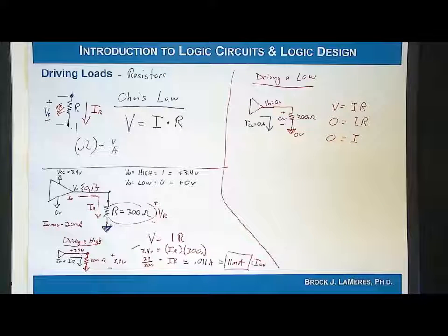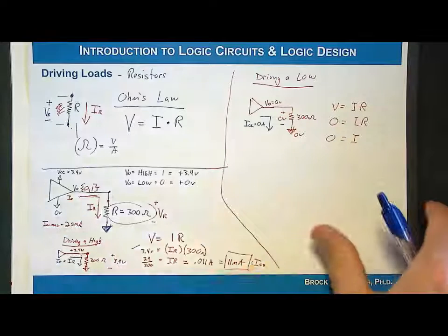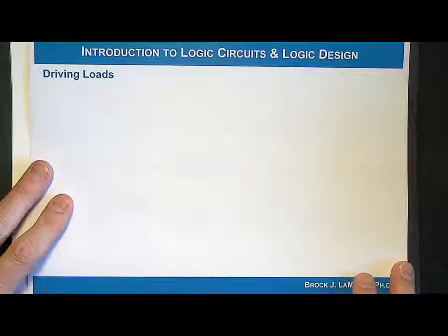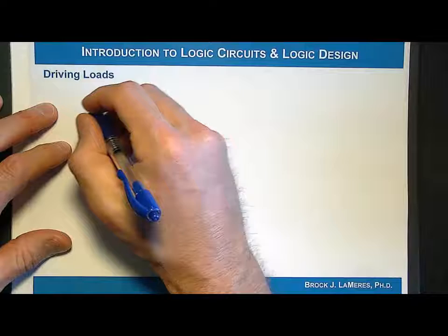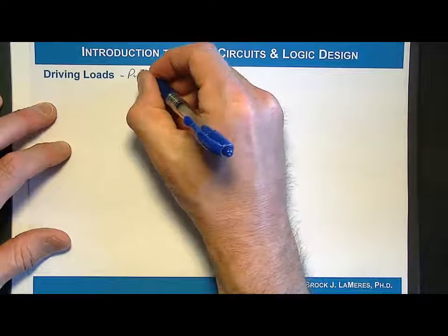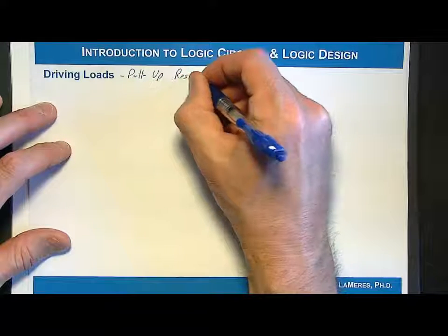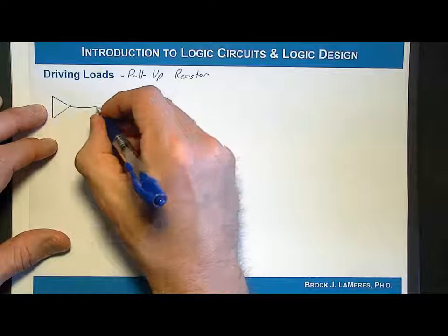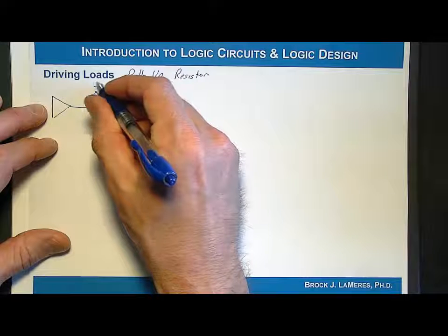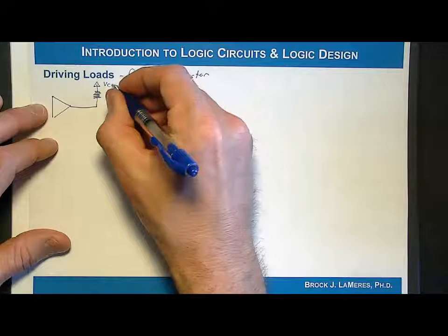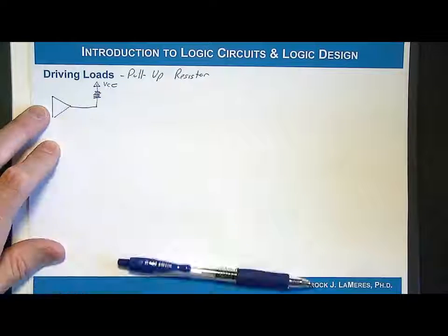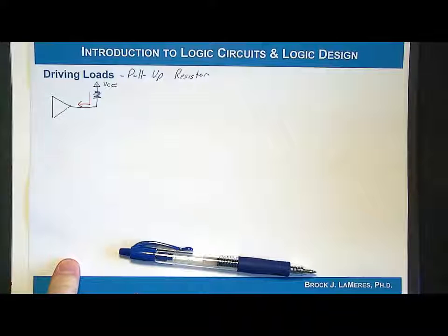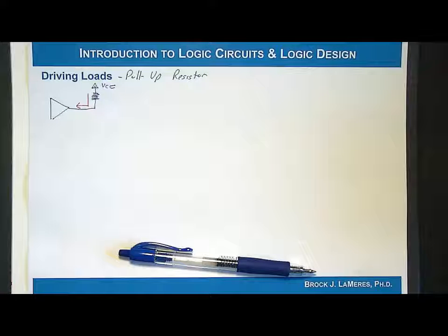That is driving a pull-down resistor. Now let's look at a pull-up resistor. A pull-up resistor has the same analysis but a different configuration. The resistor is connected between the gate output and VCC — the current flows from VCC down into the device, and we want to figure out what that current will be.